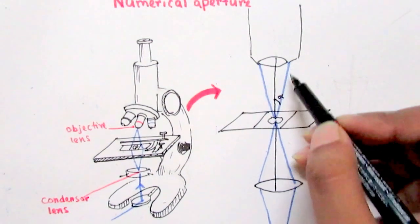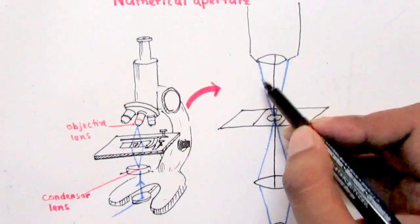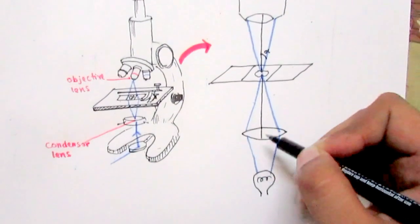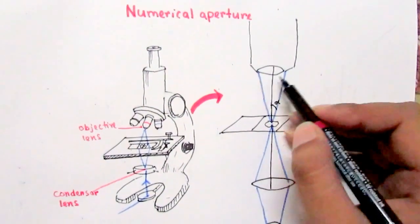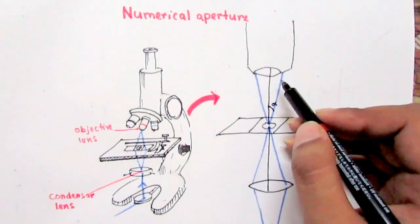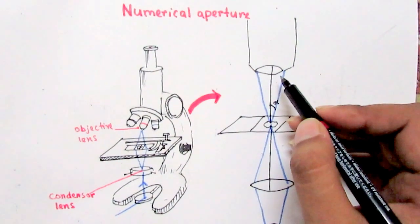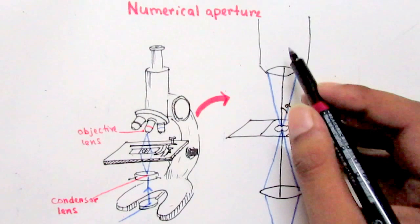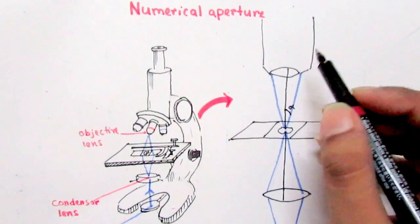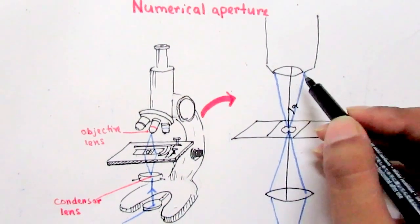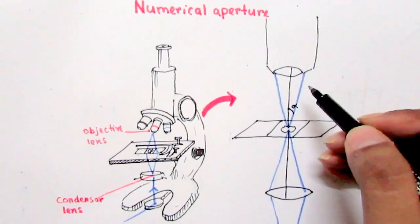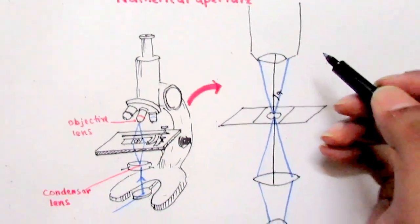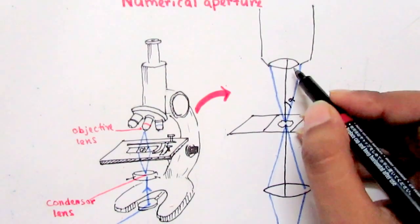Numerical aperture is defined as the capability of the objective lens to gather the cone of light. The light coming from the source, when it reaches the objective lens, appears as a cone of light. The ability of the objective lens to capture this cone of light is known as numerical aperture.